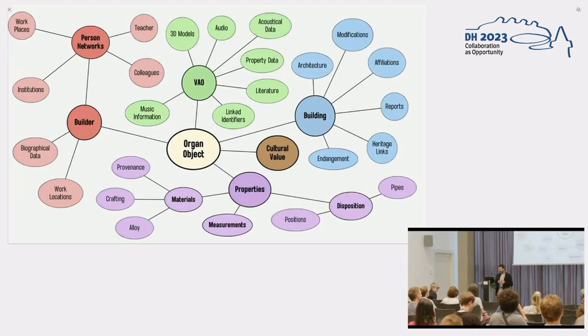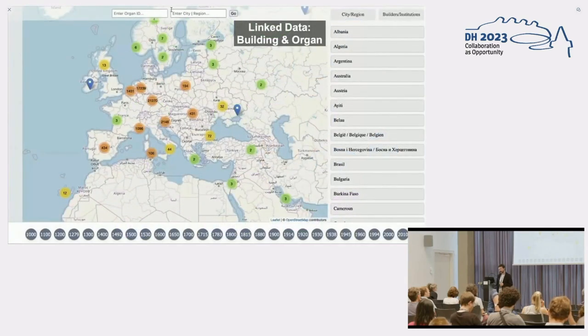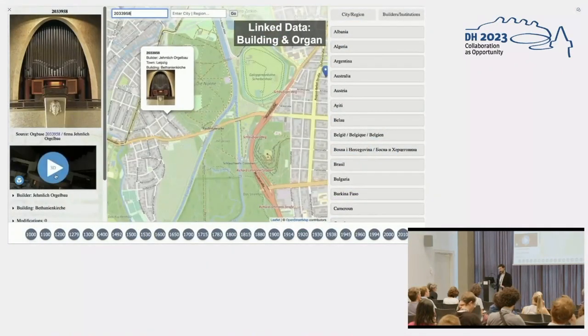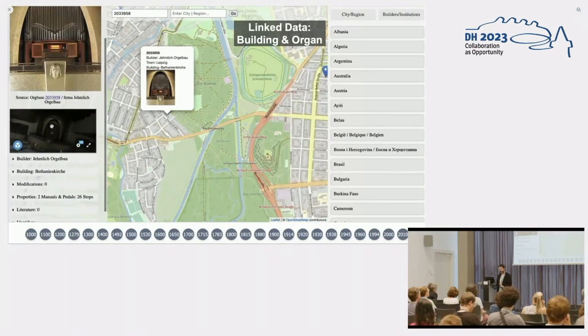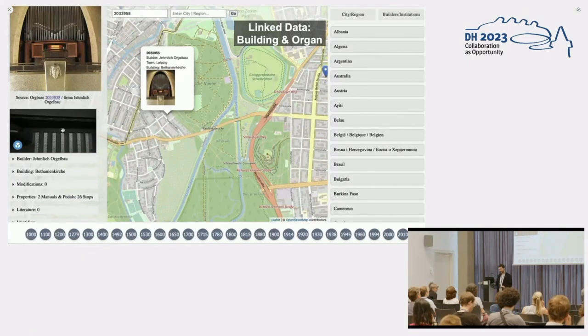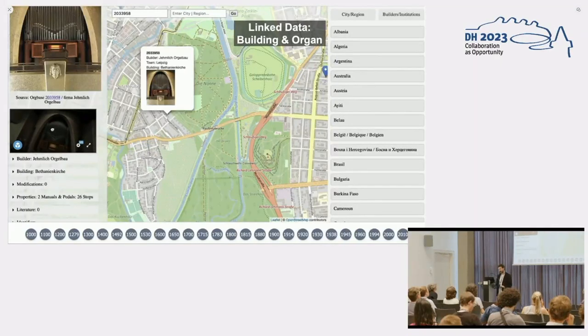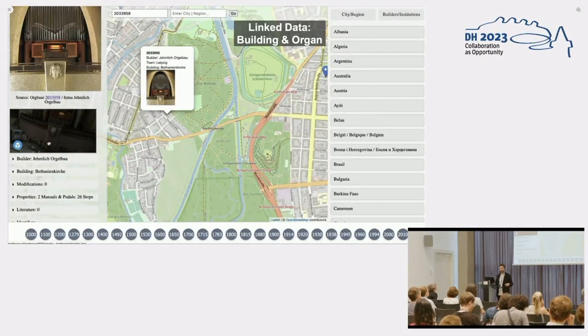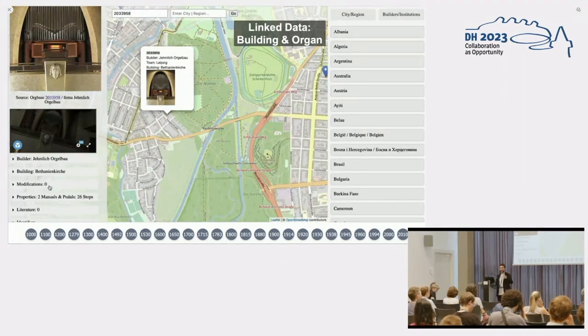This is how an organ object looks like. We have lots of relations to the building, to the builder, person networks around it. Who was the teacher of the organ builder? Who are the colleagues? Where did he learn? Where did he work? Also we have the properties like materials and so on. This is why we need linked data on this platform as well. This is, for example, this church you've seen before. You can directly view the 3D model of it inside this small window. You can do it in full screen. This is the corresponding 3D model of the interior. My hope is that we get more accessible technologies like NeRF radiance fields. We can scan buildings a lot and then we can build up this database and link to it.